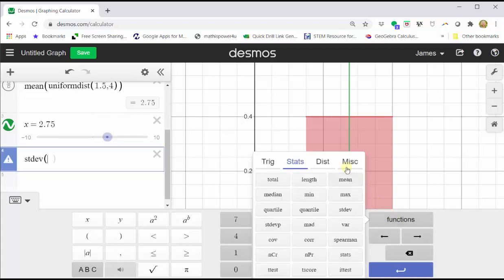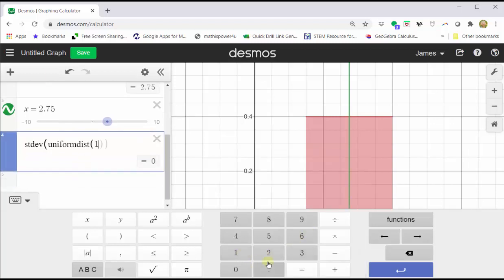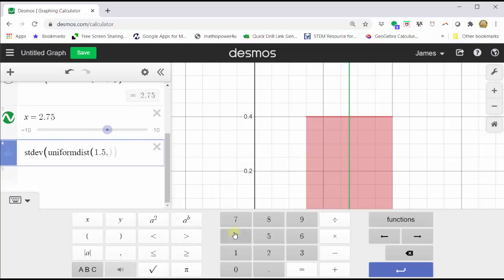Functions. Distributions. Uniform distributions. 1.5 comma 4. Enter.